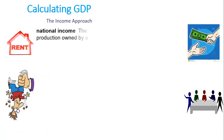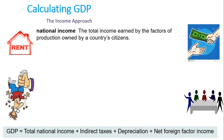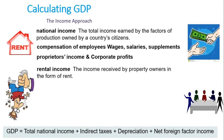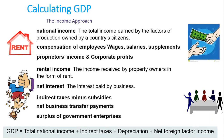Moving to the income approach: GDP can be calculated by taking the total amount earned by every household and all firms in an economy, expressed as the total productive value of economic activity over a period of time, with adjustments made for taxes, depreciation, and foreign factor payments. National income includes compensation of employees (salaries and wages), rental income received by property owners, net interest, and indirect taxes minus subsidies.